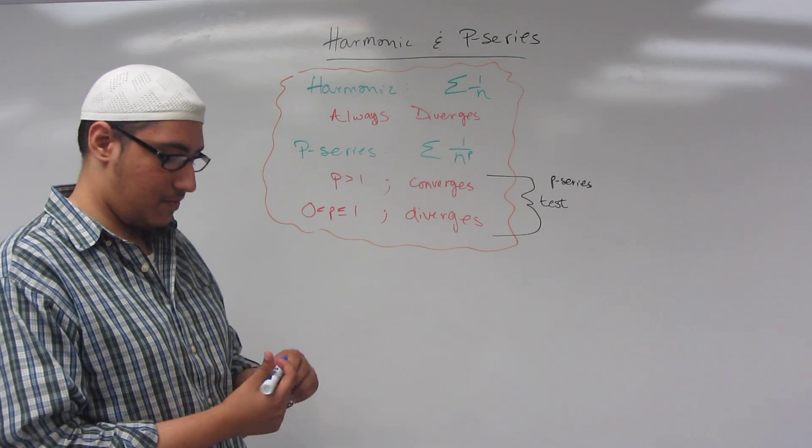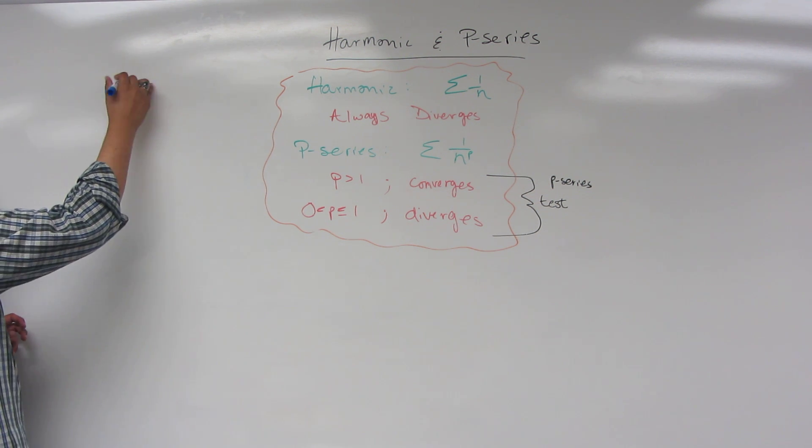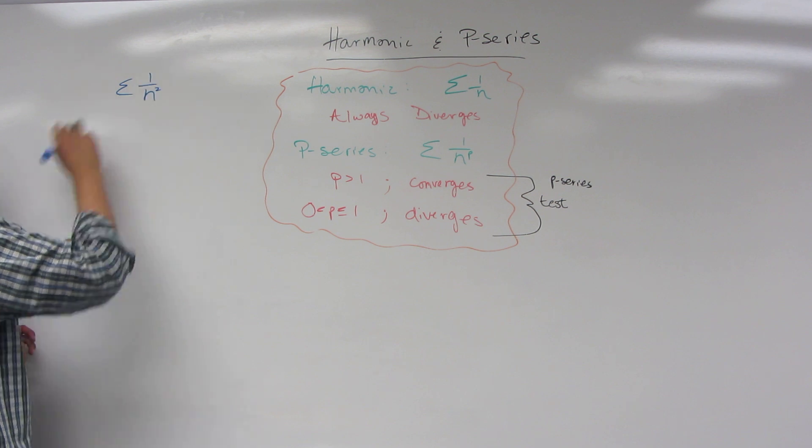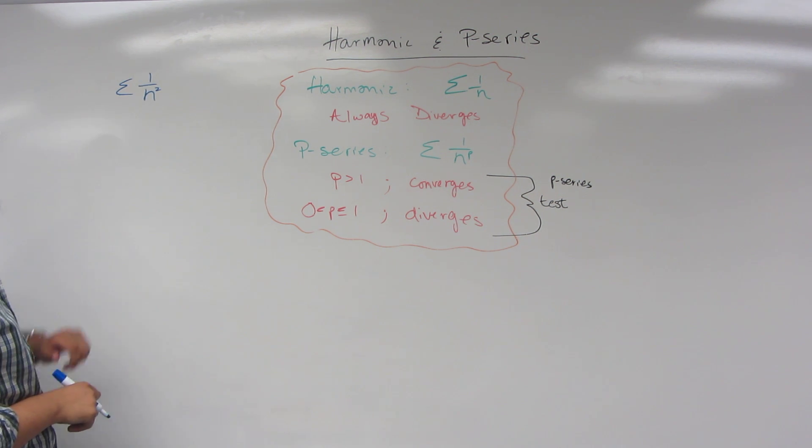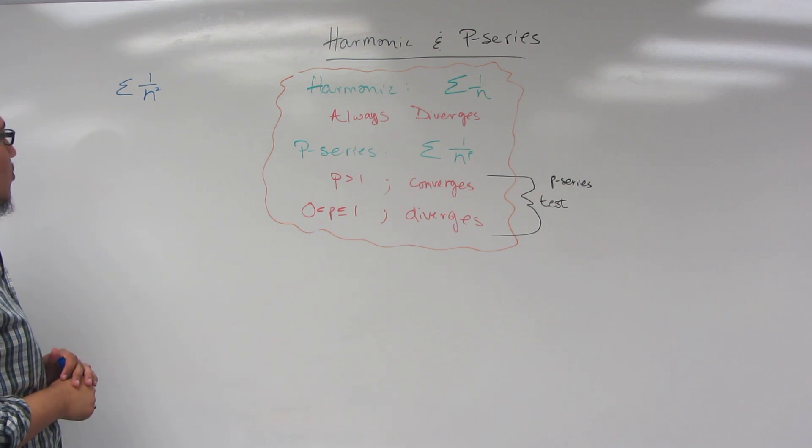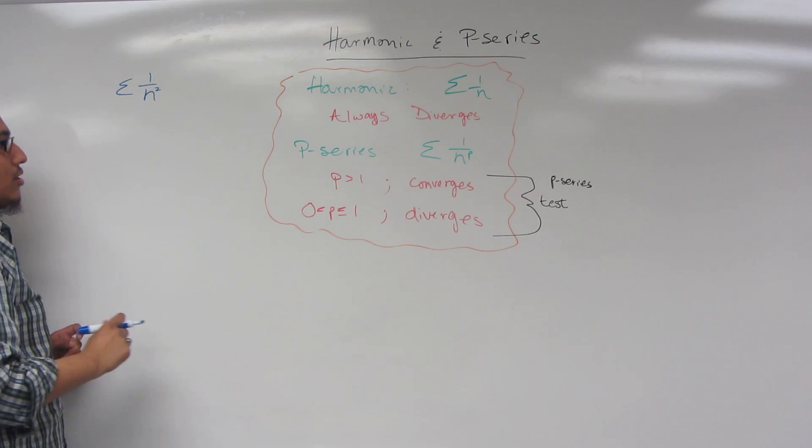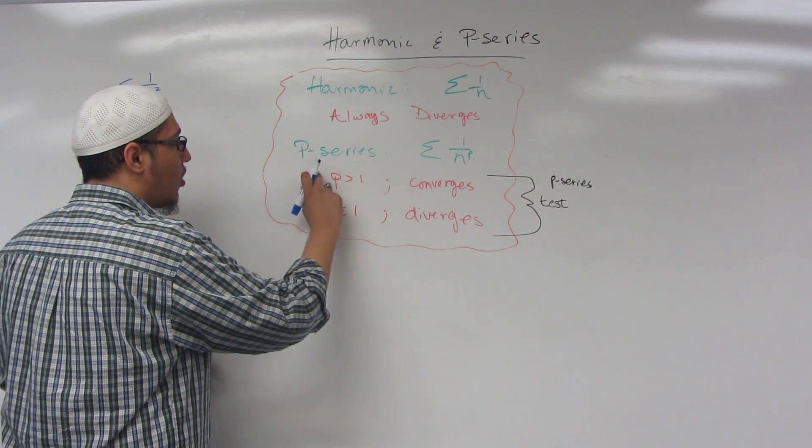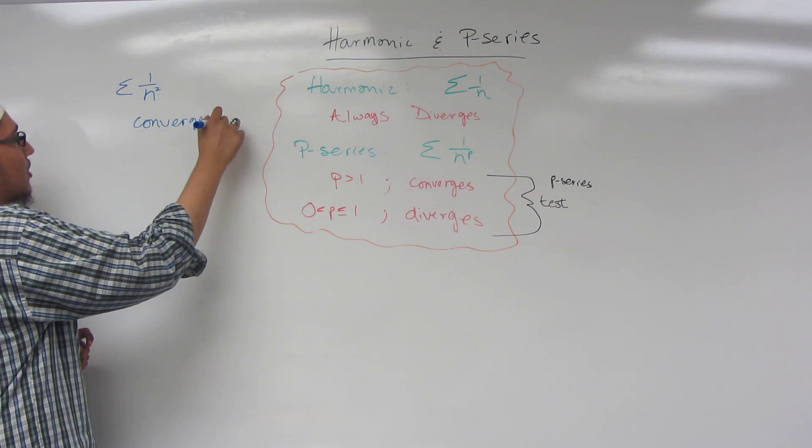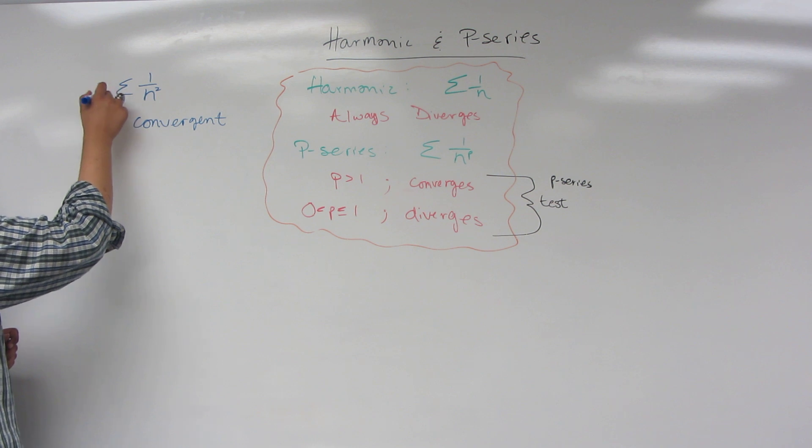Let's look at a couple of examples. If we have sigma 1 over n to the second power, this is a p-series, correct? And what is our p-value? Our p is 2. 2 is greater than 1, therefore this series is convergent. So it's as simple as that. It's as simple as looking at the test essentially.